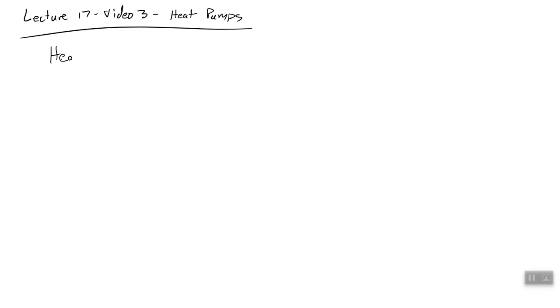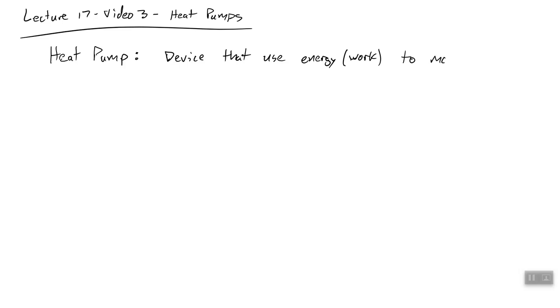So, what is a heat pump? We learned about heat engines — what is a heat pump? A heat pump is a device that uses work in order to move heat. Moving heat naturally is easy: it just goes from hot to cold. But a heat pump moves heat in the opposite direction you would expect, from cold to hot.